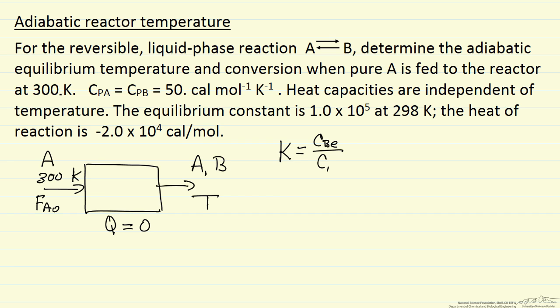So concentration of B at equilibrium over concentration of A at equilibrium, because the reaction is just A goes to B. Since we're interested in conversion, we can write this equilibrium constant in terms of conversion. The concentration of A would be our initial concentration that we're feeding in, CA0 times 1 minus our equilibrium conversion.